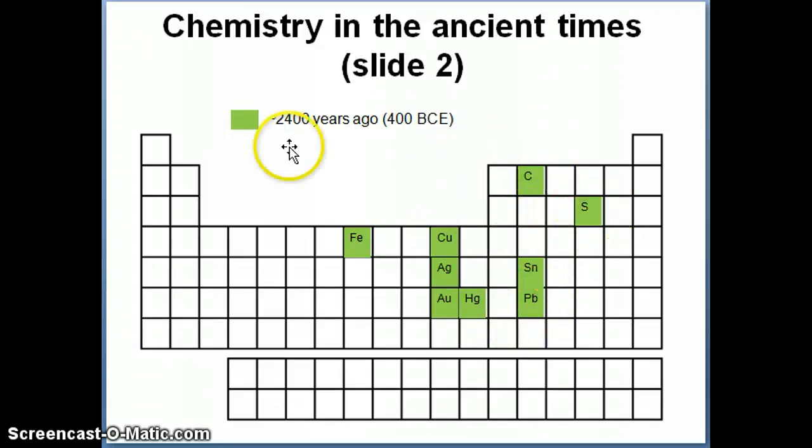And these were, if you kind of take the modern periodic table and put the elements that people knew at that time, there's very few, as you can see. There's not a lot. Carbon is known, sulfur is known, copper, silver, gold, quicksilver, or mercury was already known, iron, and so on.